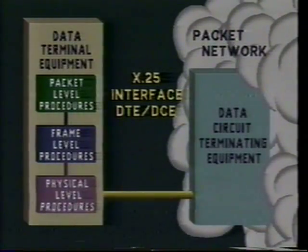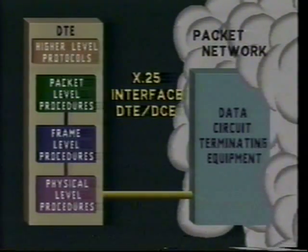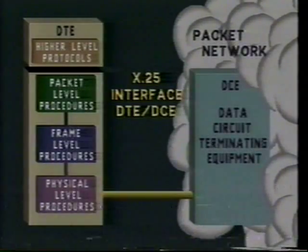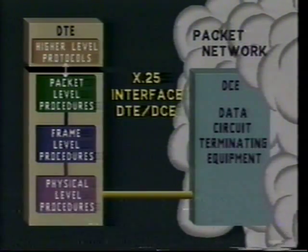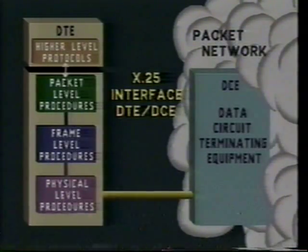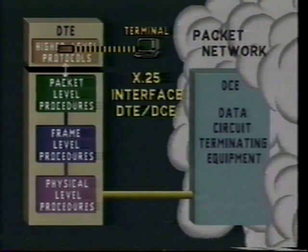Besides the three lower levels which comprise the X.25 protocol, there are four higher-level protocols which also play an important part in allowing your data terminal to interface with a network — to ensure end-to-end flow of complete, error-free messages. Basically, the higher-level protocols take your raw digital information and pass it onto the X.25 levels for appropriate packetizing.